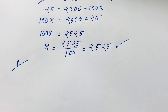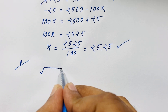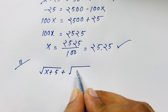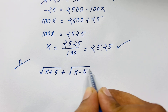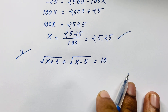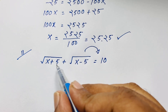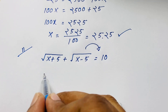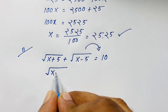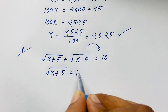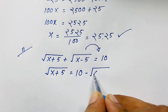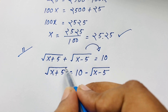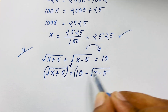Now I solve this question using another method. Our question is: square root of (x plus 5) plus square root of (x minus 5) is equal to 10. I move square root of (x minus 5) to the other side, so it becomes negative.